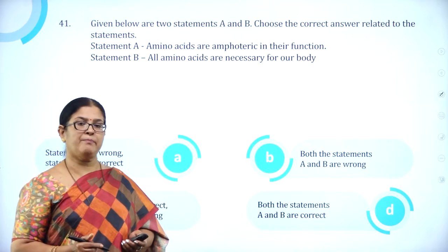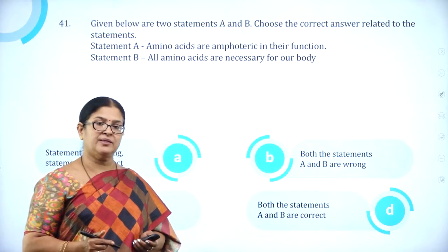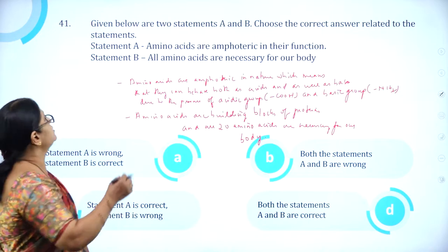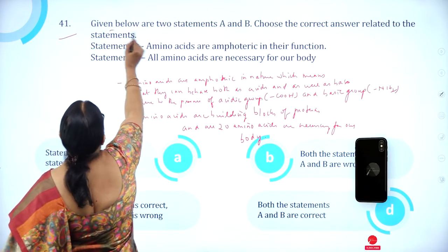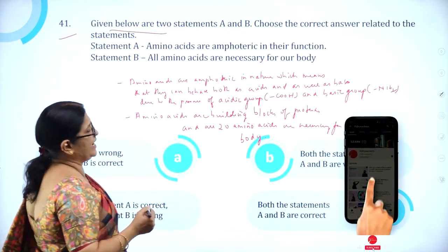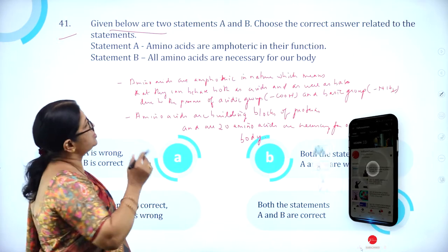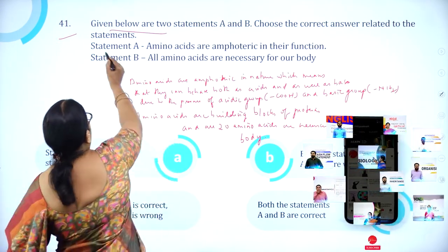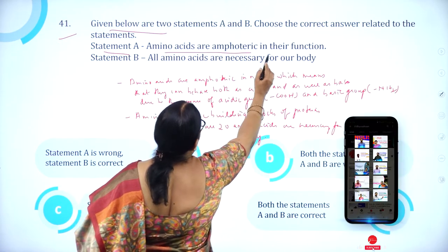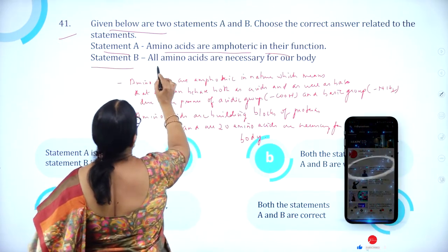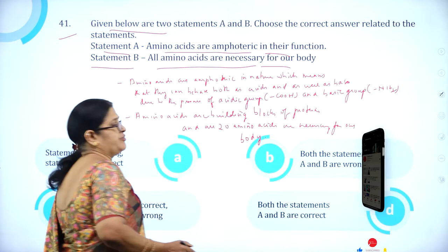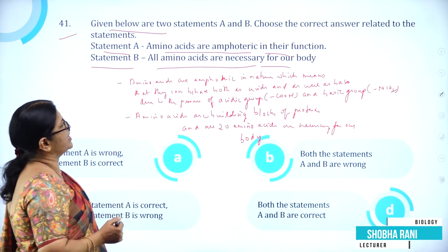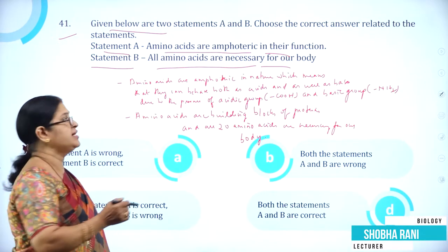Hello everyone, welcome back to part 3 of this KCET 2008. Moving on to question number 41. Given below are two statements A and B. Choose the correct answer related to the statements. Statement A: amino acids are amphoteric in their function. Statement B: all amino acids are necessary for our body. Statement A, amino acids are amphoteric in their function, is correct.